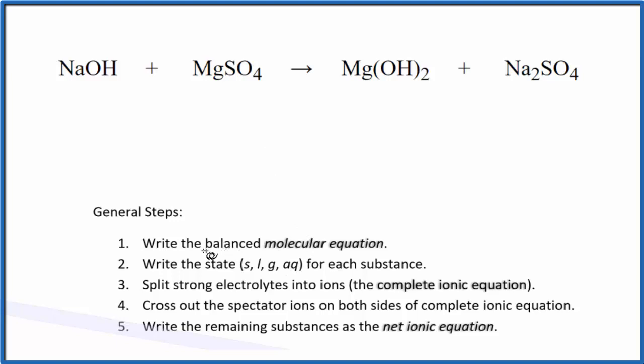First thing we need to do is balance the molecular equation. I can see I have two hydroxide groups here and just one here, so I'm going to put a two in front of the NaOH. Now I have two sodium atoms, that's good. Magnesium, magnesium, sulfate, and sulfate. So the molecular equation, that's balanced.